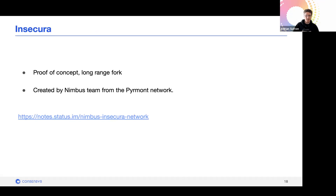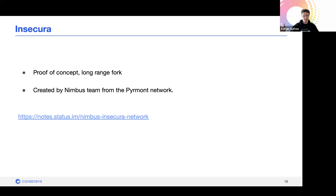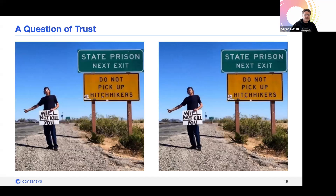There is a proof of concept of this that the Nimbus team created. They took the Pyrmont test network, which was shut down with many validators exited, and created a long-range fork that is completely valid if you're syncing from Genesis — it passes as a perfectly valid state transition in a normal client. Their chain starts finalizing, and it's now a continuing, perfectly valid network — just not actually the canonical Pyrmont one.